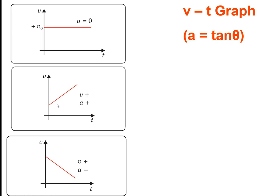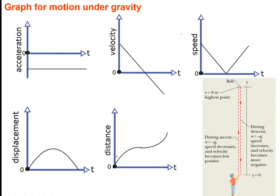On the v-t graph, slope gives acceleration. In the first case, slope is 0 so acceleration is 0. In the second case, velocity is positive and increasing, so acceleration is positive, and initial velocity is non-zero. In the third case, velocity is decreasing — slope is decreasing.